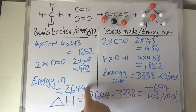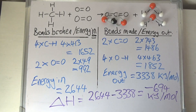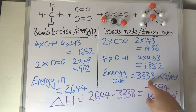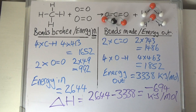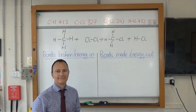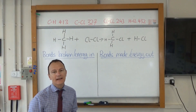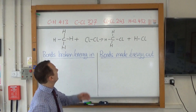In an exam question you'd get a mark for working out the energy in by breaking the bonds, you'd get a mark for the energy given out when the bonds are made, and then the overall energy change gets you your third mark. This is what a typical bond energy calculation would look like on your actual exam paper.